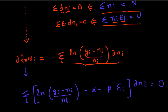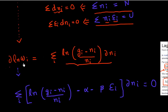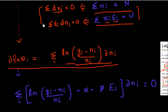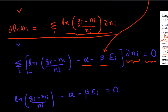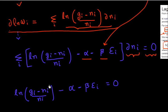In my case, I want to optimize log(W). I have two given constraints, so I define a new function which is my objective function multiplied by these constants — my Lagrange multipliers, alpha and beta. Given this mathematical relationship, the partial derivative of this new function with respect to my number of particles has to be zero.